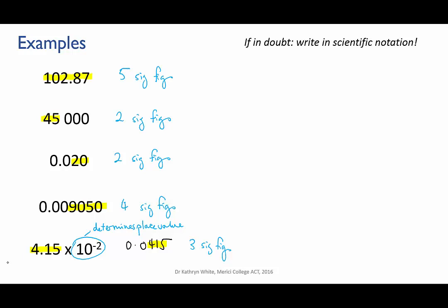This also gives us a strategy for dealing with the ambiguity in numbers like 45,000. What if we actually want to write 45,000 to five sig figs? That is, we want to show that the 45,000 was measured accurately to the nearest whole number.